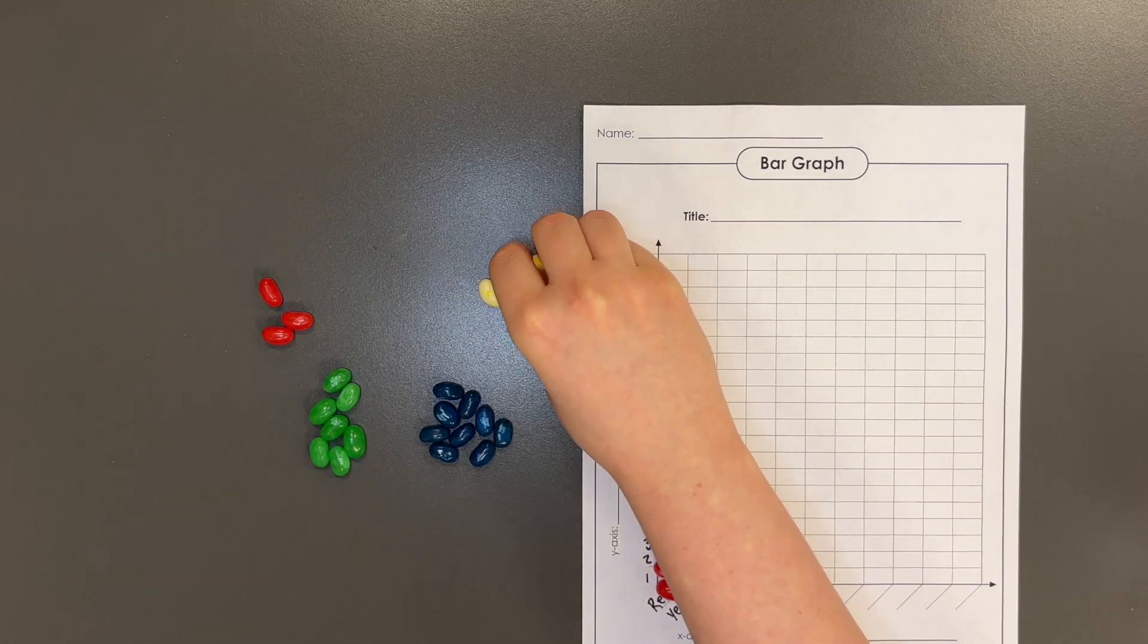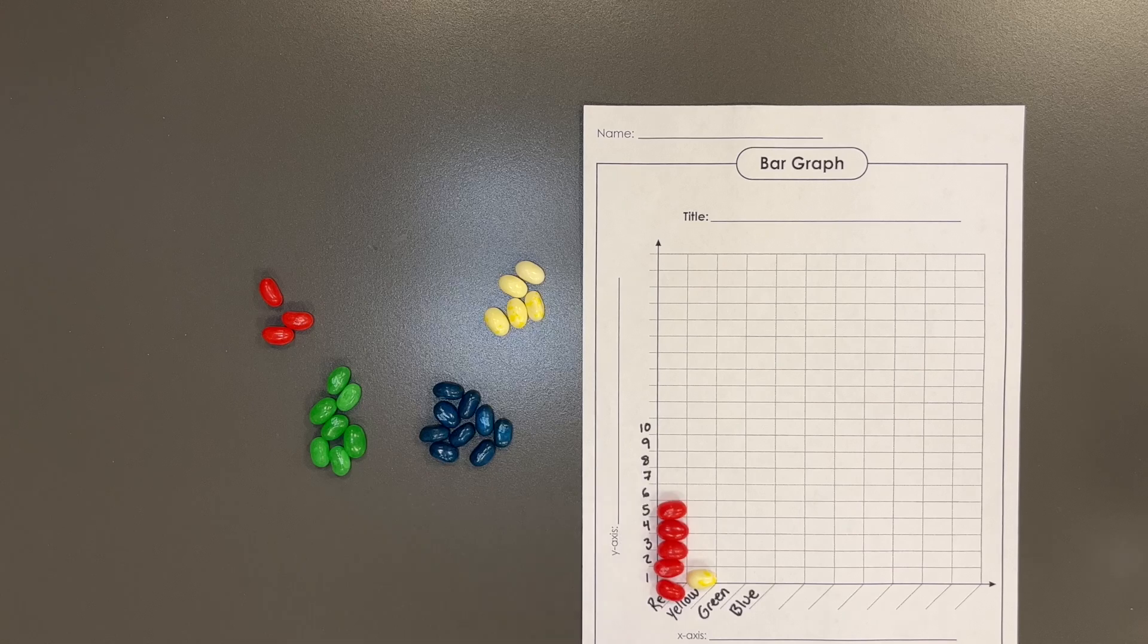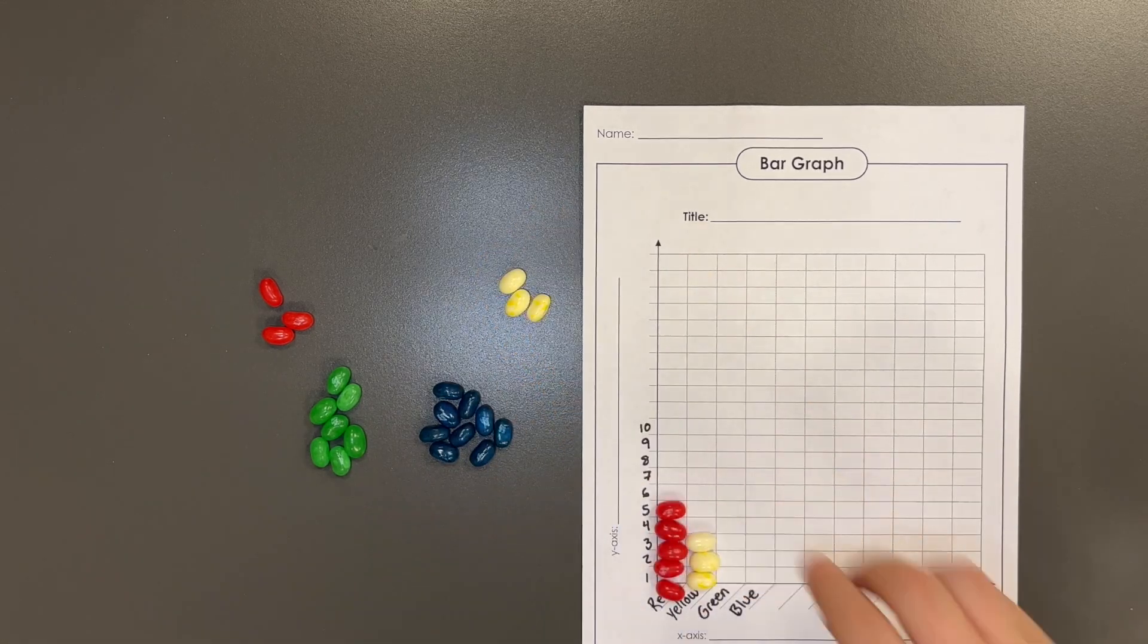Now that we have our sorted jelly beans it's time to create our bar graphs. Each color of jelly bean will represent a different category on our graph.